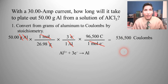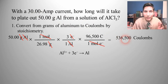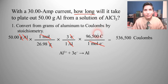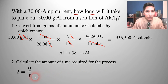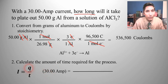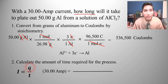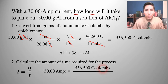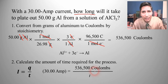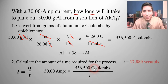Now we know the current — 30 amps — and the charge — 536,500 coulombs. We can plug into I equals Q over T to find the time. Solving for T gives us about 17,880 seconds.